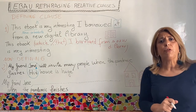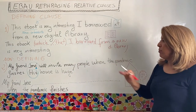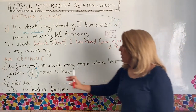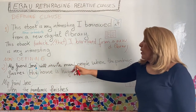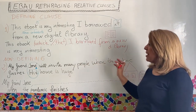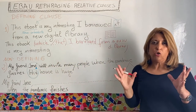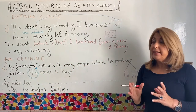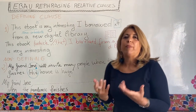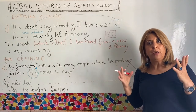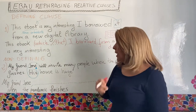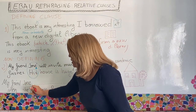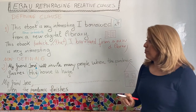Now let's look at the second example, which is a non-defining clause. We have: 'My friend Jose will invite many people when the pandemic finishes.' and 'His house is huge.' We can see we are talking about Jose and his house. This is non-defining because it gives extra information — we already know perfectly well who my friend Jose is. We start with 'My friend Jose', then add a comma because it is non-defining.